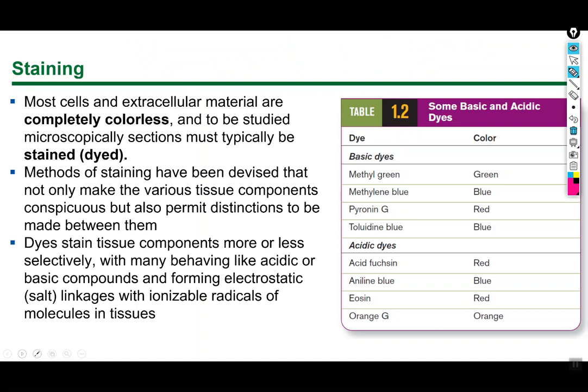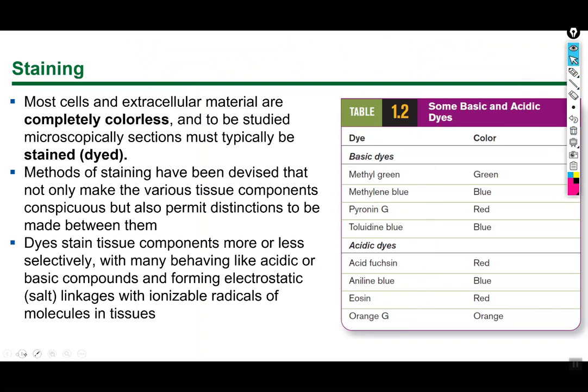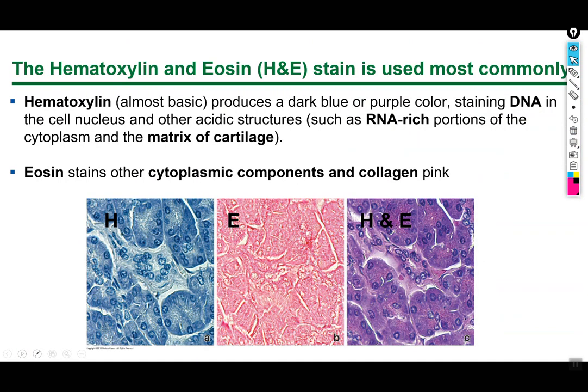Basic staining uses pigment chemicals that behave as acidic or basic compounds. They form salt bridges with ionizable radicals in tissues — atoms that readily gain or lose an electron, allowing them to form ionic bonds with these compounds.